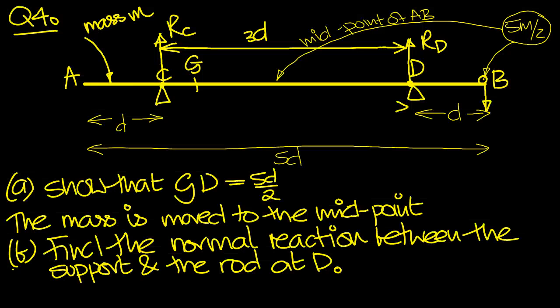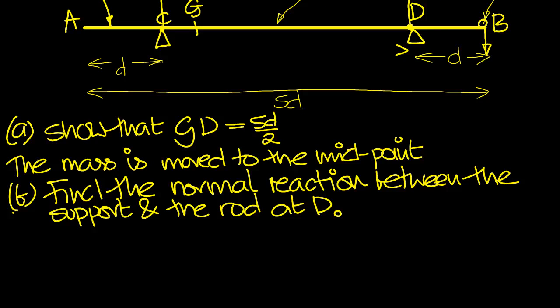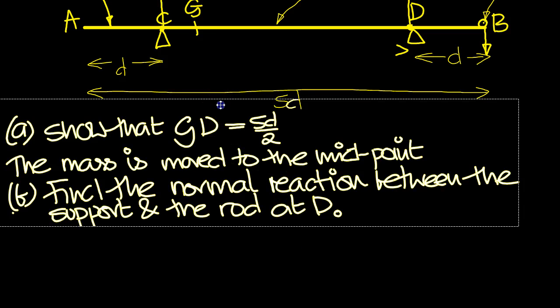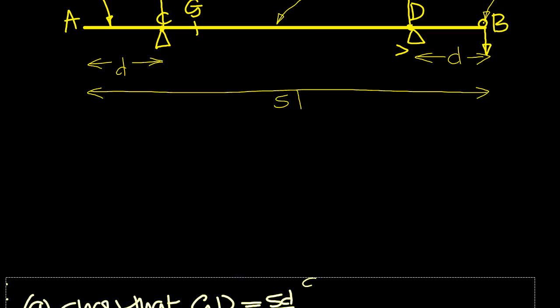So that's the question then. I've got it in summary form here. So here's A and B. We need to show that GD is 5D over 2 first. I'm going to move this question down so we can work with the picture and look at the actual workings.